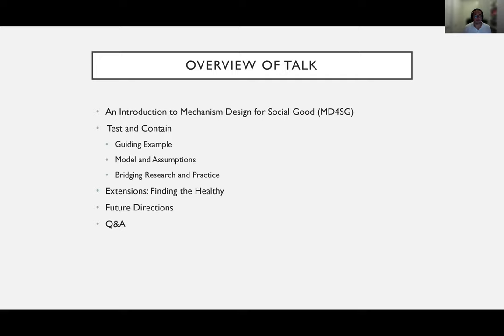The overview of the talk is that I'll begin by talking about Mechanism Design for Social Good, or MD4SG as we call it for short, giving an overview of the organization and our activities, and mentioning how the specific project of the talk was born out of the mission of the organization and the bridges it makes between practitioners and theoreticians. The bulk of the material will be on a project called Test and Contain that maximizes the utility of a limited number of COVID tests, and we'll also discuss some extensions and future directions.